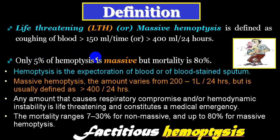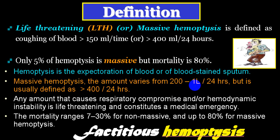Only 5% of haemoptysis cases are massive, but mortality in that group is almost 80%, because if you don't diagnose and treat them early, the mortality rate is very high. Massive haemoptysis is described as ranging from 200 ml to one liter in 24 hours, but we generally use more than 400 ml in 24 hours. If a person is losing one liter, the chances of survival are very poor. A person can also be considered to have massive haemoptysis if there is respiratory compromise with or without hemodynamic instability — severe hypotension, tachycardia, or peripheral shock.